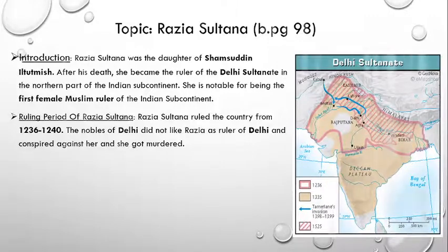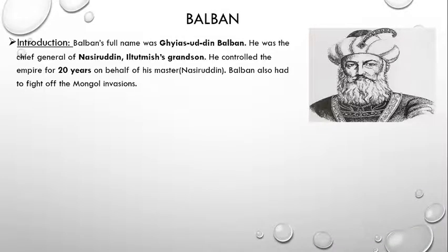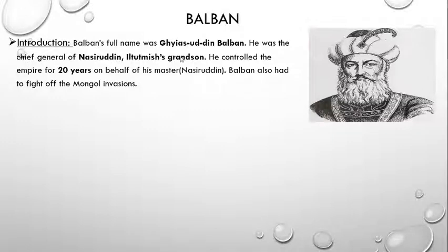Now we will study about Balban. This is a picture of Balban. Balban's full name was Razuddin Balban. He was the chief general of Nasiruddin, Il Thutmish's grandson. He controlled the empire for 20 years on behalf of his master Nasiruddin. Balban also had to fight off the Mongol invasion. Nasiruddin was Il Thutmish's grandson, and in 1246 the Nobles appointed Nasiruddin as the new emperor of the dynasty. But actually Nasiruddin was under the influence of his general Balban, so indirectly Balban was the one ruling the whole empire. He also made a very strong impact as an emperor over his public and the whole dynasty.